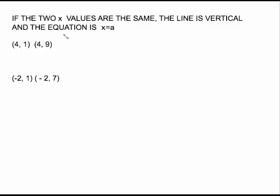Same kind of rule. If the two x values are the same, the line must be vertical and the equation is x equals a. So, here we go. I've got these two x values the same, so my equation is x equals that number. Here's my two x values the same, so my equation is x equals that number.